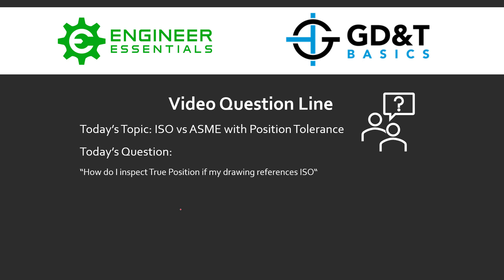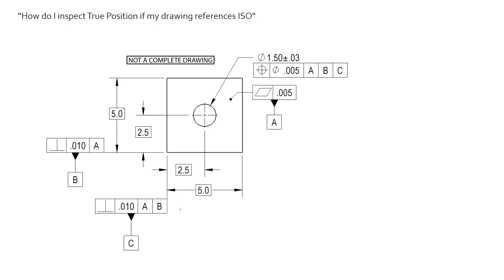Hey everybody, Jason here again with GD&T Basics on the video question line. Today's topic is centered around ISO versus ASME when we're considering the position tolerance and really any other tolerance that's controlling features of size. Today's question is: how do I inspect true position or position if my drawing references the ISO standards? So let's dig right in.